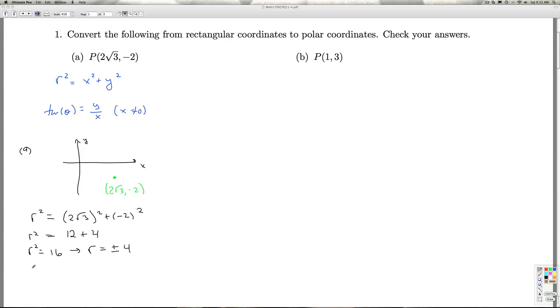Let's look at theta now. Tangent of theta is y over x, so that's negative 2 over 2 radical 3, which is negative 1 over radical 3.